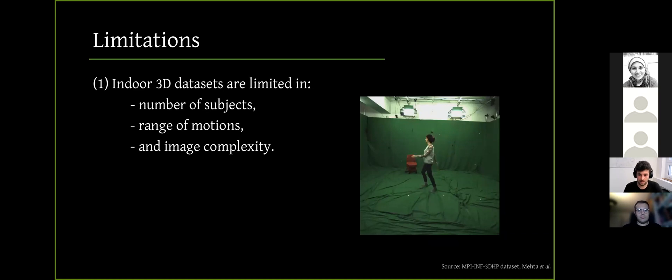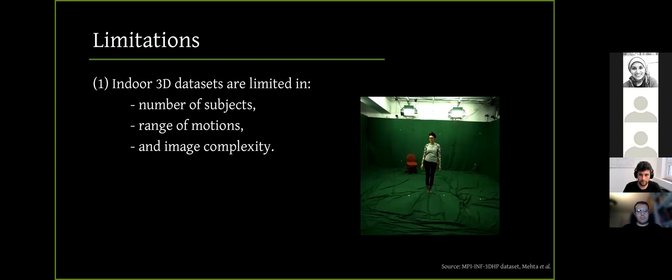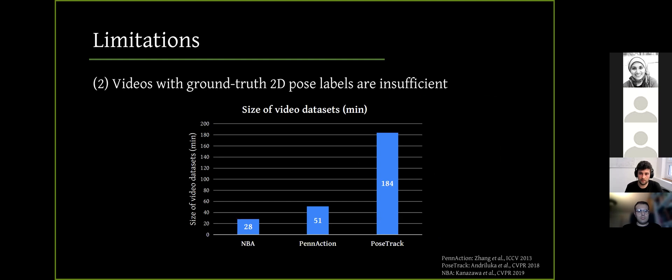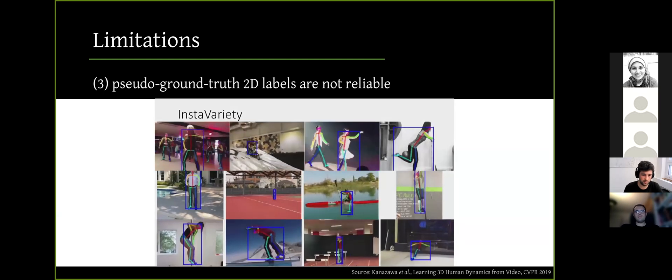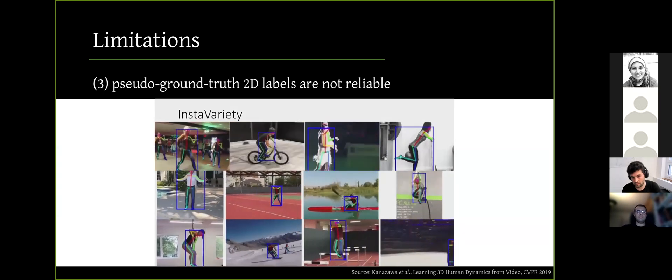Firstly, indoor 3D datasets are limited in the number of subjects, range of motions, and image complexity. Secondly, the amount of videos labeled with ground truth 2D pose is still insufficient to train deep networks, especially video-based deep networks. And also, thirdly, they use pseudo ground truth dataset which is annotated by OpenPose. And these 2D labels are not reliable for modeling human motion and they are quite noisy and unstable over time.